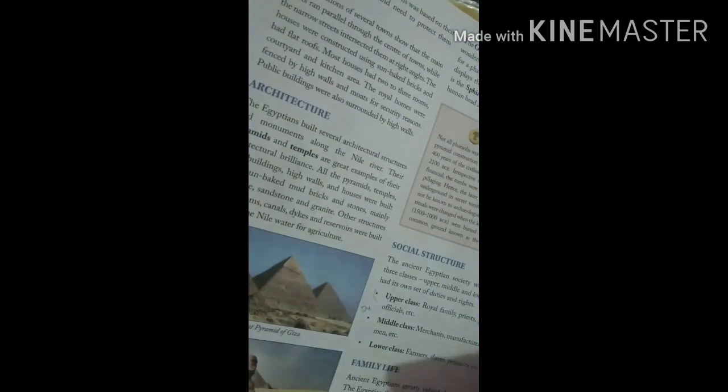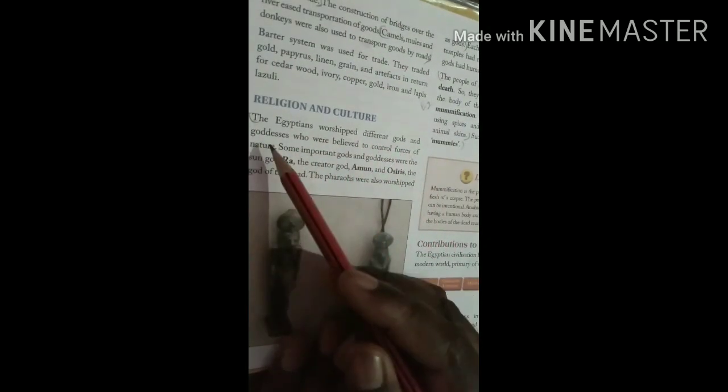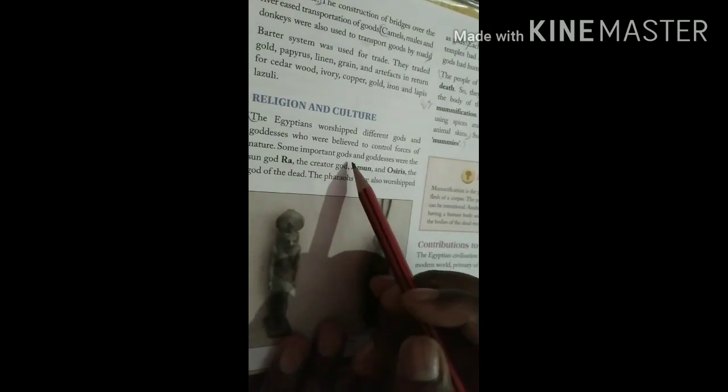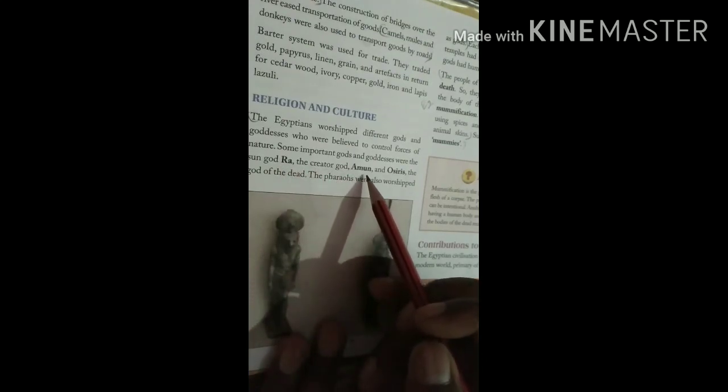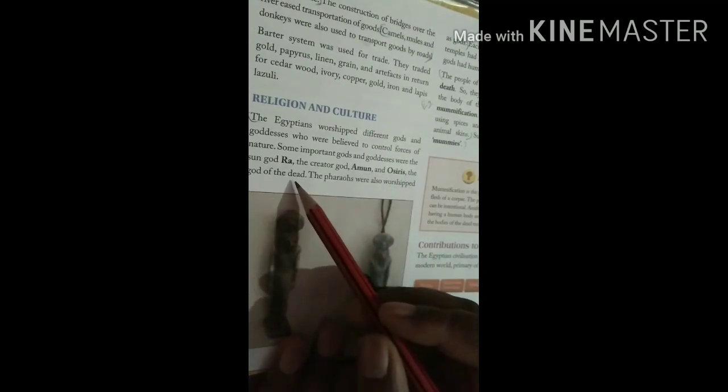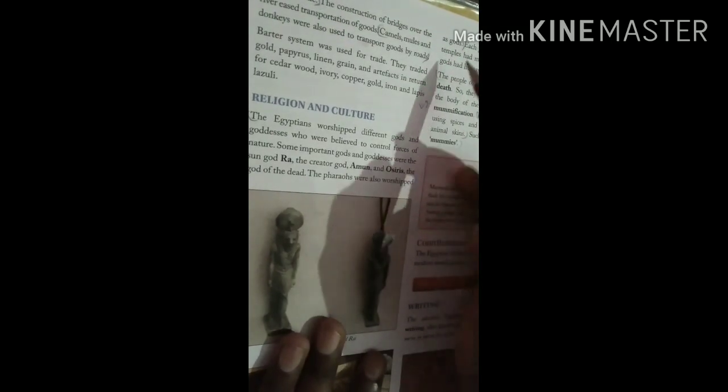Now come to the next question, question number four. Describe the religious beliefs of the early Egyptians. This is on page number sixteen, religion and culture heading. The Egyptians worshipped different gods and goddesses who were believed to control forces of nature. Some important gods and goddesses were the sun god Ra, the creator god Amun, and Osiris the god of the dead. The Pharaohs were also worshipped as gods.